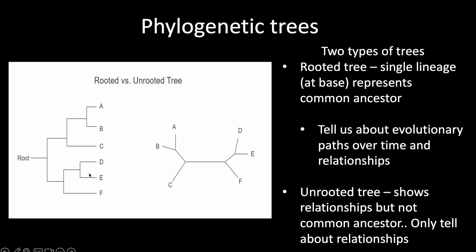In contrast, the unrooted tree on the right does not tell us what the most recent common ancestor was. We don't know when traits are arising or what our starting point is. These trees are still useful, but in a different way — we can only look at the relationships between the taxa shown.